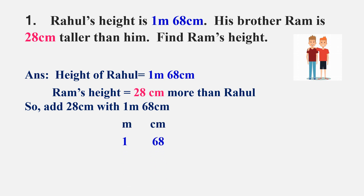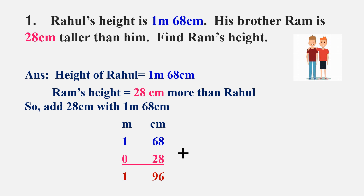Under meters we write 1 meter 68 centimeters. For the 28 centimeters, there is no meter value so we write 0 under meters and 28 under centimeters. Put the plus sign and start adding from the right side: 8 plus 8 is 16, write 6 carry 1; 1 plus 6 is 7, 7 plus 2 is 9. In the meter column, 1 plus 0 is 1. So the answer is 1 meter 96 centimeters.